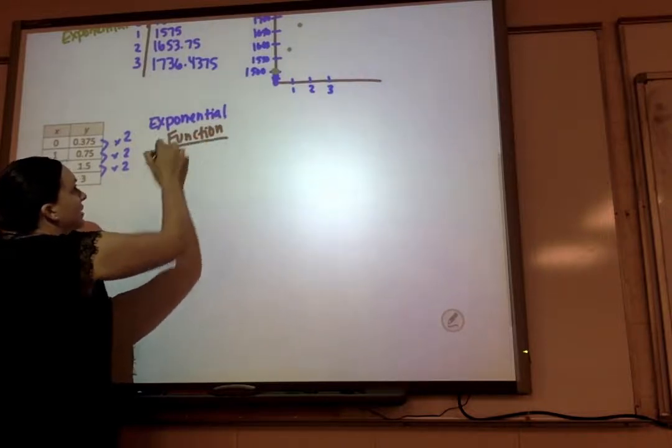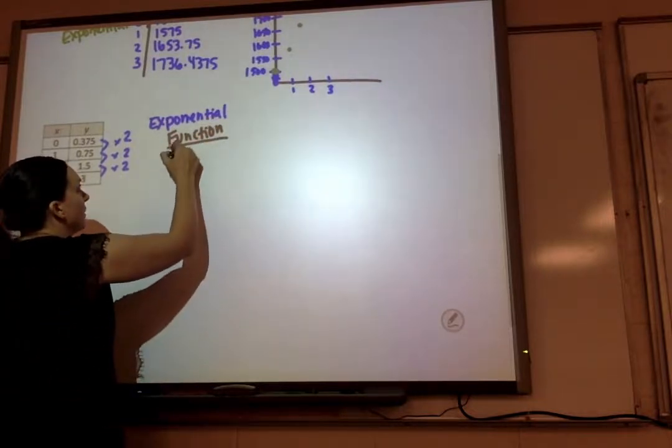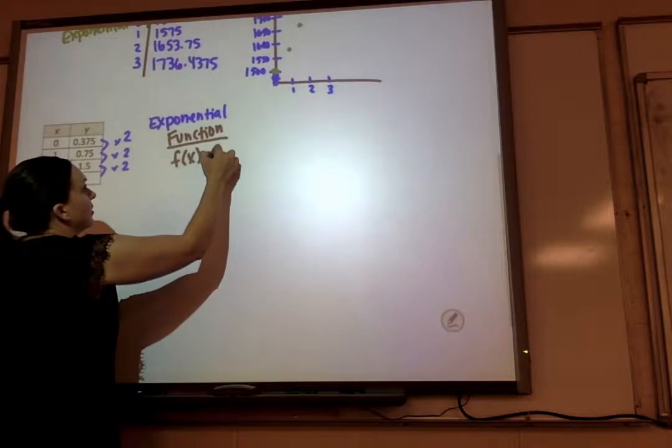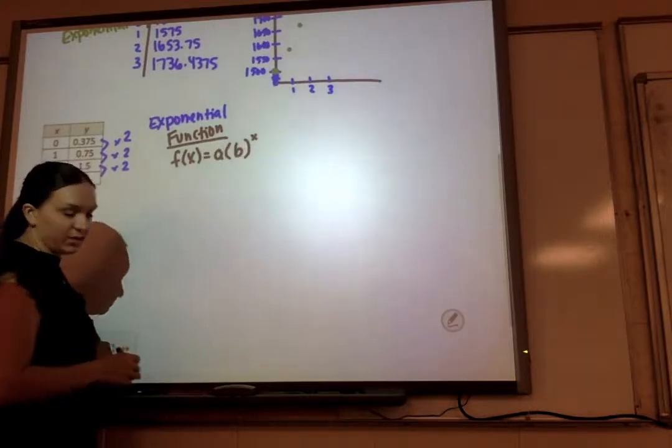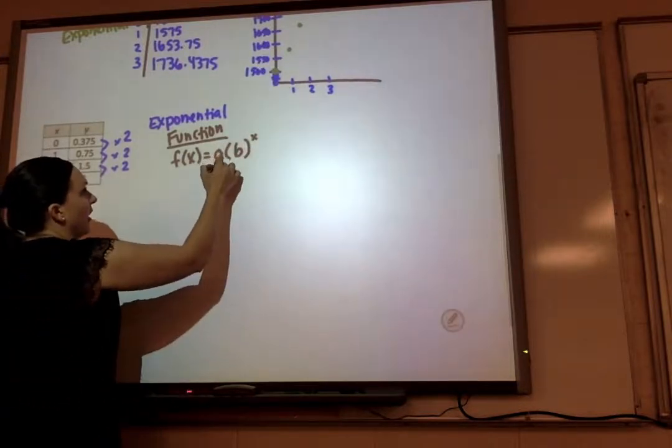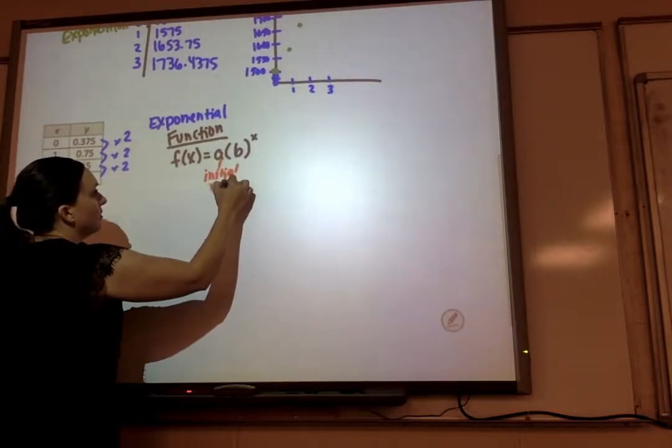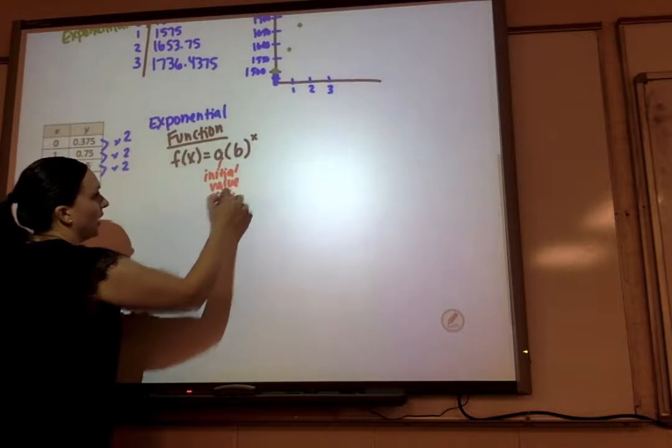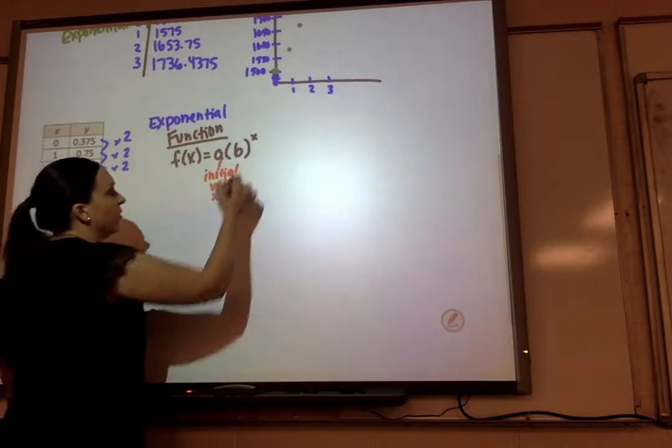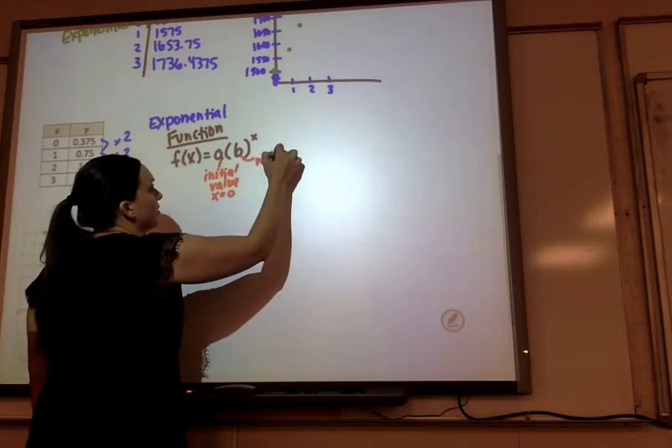The standard notation for my function is a times b to the x, where a is my initial value. So that means when x equals 0, what's the value. And b is the multiplier.